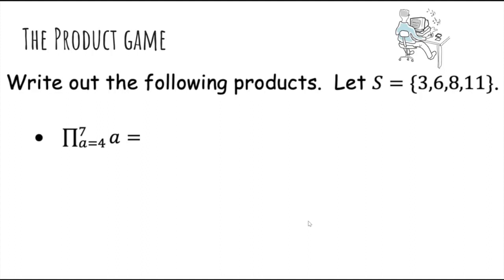So the examples work literally the same way, so if we have the product of a is equal to 4 up to 7 of a, the first term is just 4, the next term is 5, 6, 7. So we multiply all those terms together.